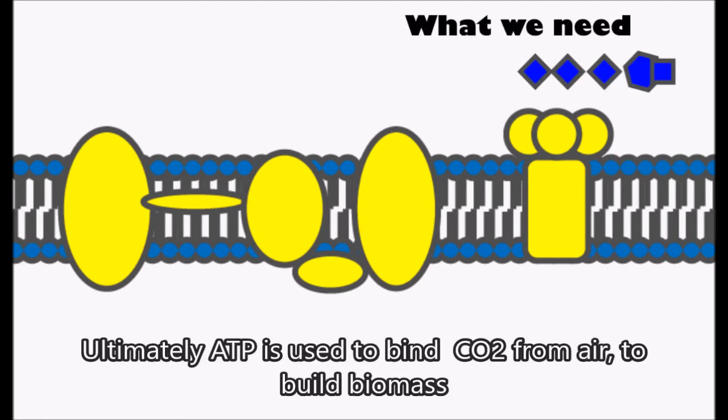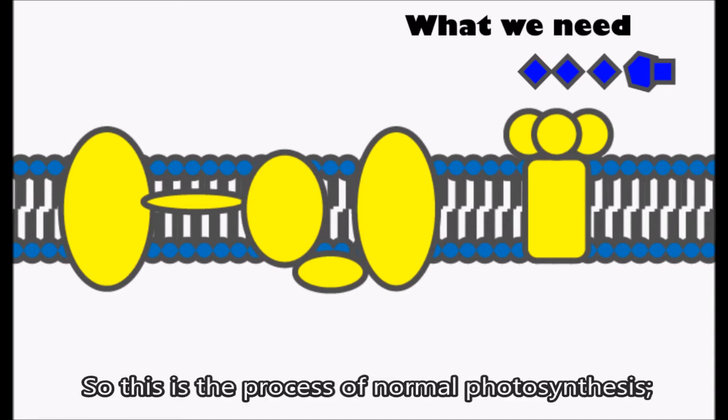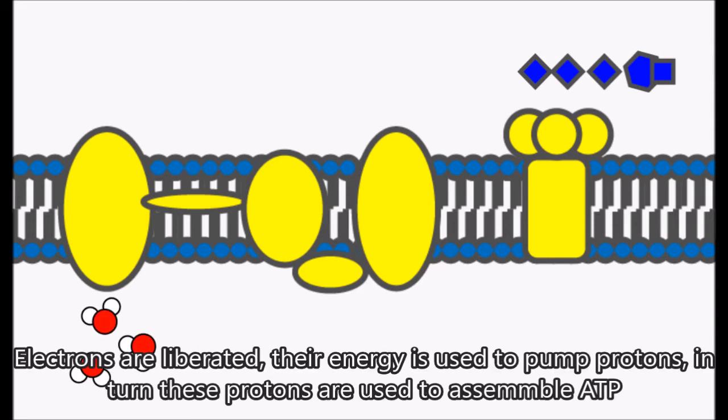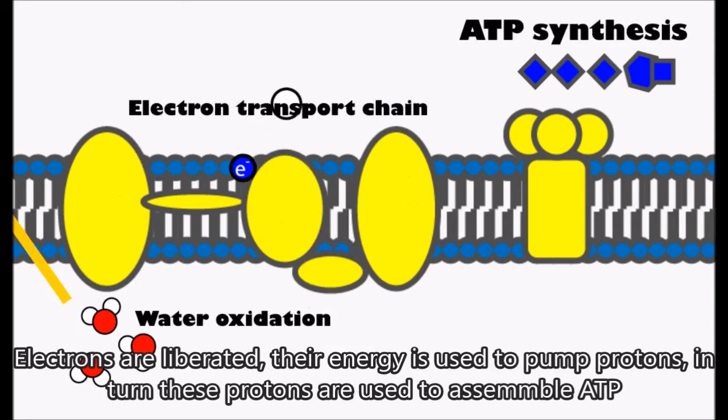Ultimately, ATP is what's needed to fix CO2 from air and to build biomass. So this is the process of normal photosynthesis. Electrons are liberated, their energy is used to pump protons, and in turn these protons are used to assemble ATP.